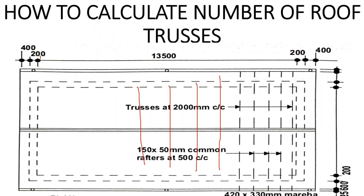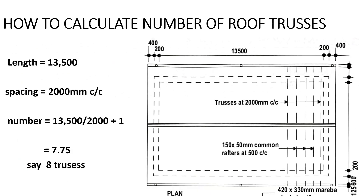We've been told the trusses are spaced at 900mm center to center. We want to find how many there are. Note: we did a video on how to calculate the rafter. When calculating rafters, remember to subtract the number of trusses, because if you don't, combining trusses and rafters will exceed the given length of 13,500mm.